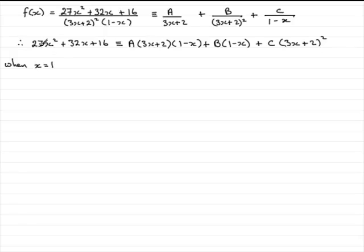I mean, if we have to do simultaneous equations, it just slows us down. Okay, so if we substitute x is 1 into here, you're going to have 27 plus 32 plus 16, and that comes to 75. And on the other side, if x is 1, this term's gone, this term's gone, and then if x is 1 in here, we've got 3 times 1 is 3, plus 2 is 5. 5 squared is 25, so you've got 25c. And so it follows from that that c is going to be 75 divided by 25, which is 3. So we've got our constant c.